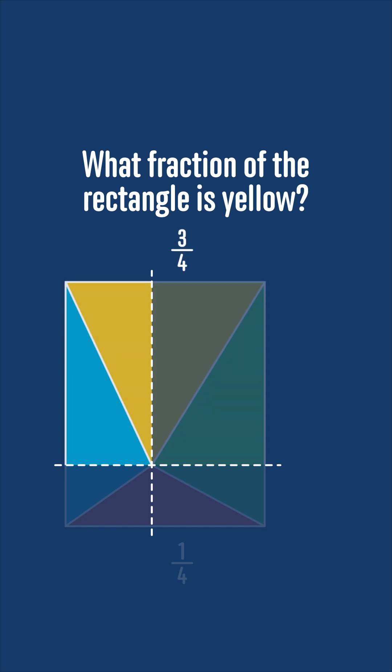But this section also has two pairs of identical triangles. The yellow triangle is made up of one of each type of these, and so is half of this area. One-half of three-quarters is three-eighths, and so the yellow area is three-eighths of the total area of the rectangle.